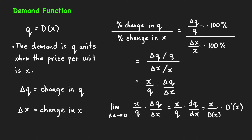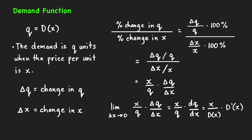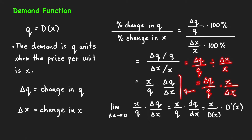We can write the percent change in q as delta q over q times 100%, and the percent change in x as delta x over x times 100%. Cancelling these common factors between numerator and denominator, we get the complex fraction delta q over q, divided by delta x over x. This complex fraction equals delta q over q divided by delta x over x, which can be written as a multiplication: delta q over q times x over delta x, giving us this expression.